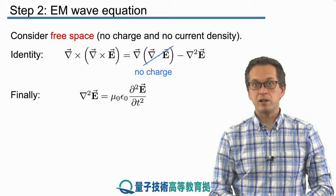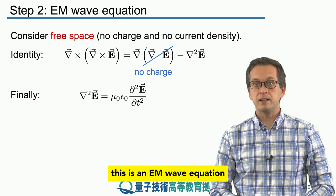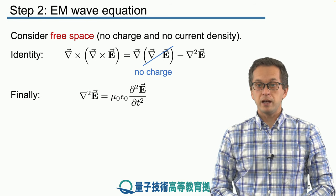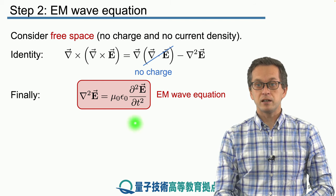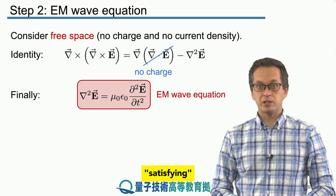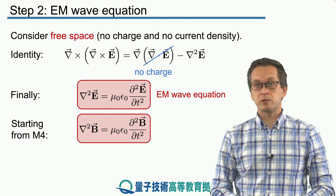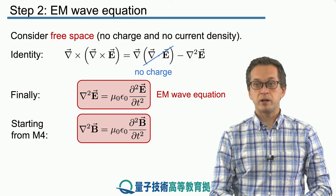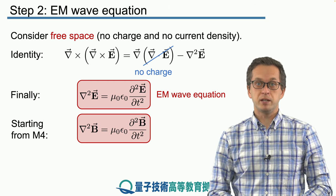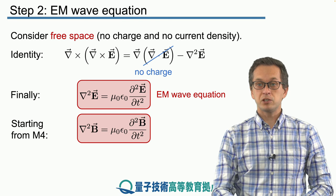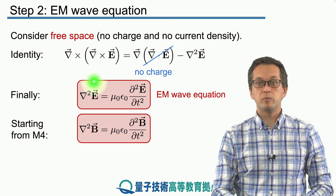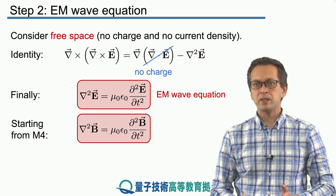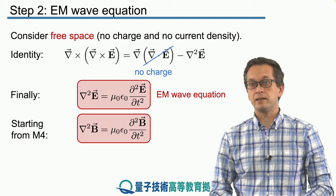Upon substitution we get that the Laplacian applied to the electric field equals mu naught times epsilon naught times the second order time derivative of the electric field. This is a familiar form — this is a wave equation — and it tells us that the electric field satisfies a wave equation. Similarly, starting from Maxwell's fourth equation instead of his third, we would arrive at the same wave equation for the magnetic field, showing that both electric and magnetic fields are waves. That is why we talk about electromagnetic waves.